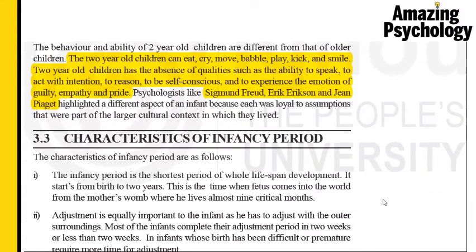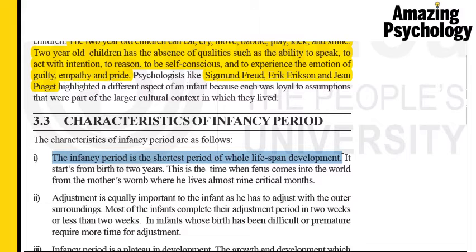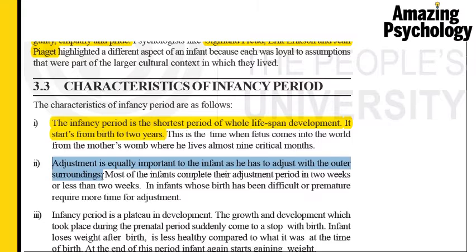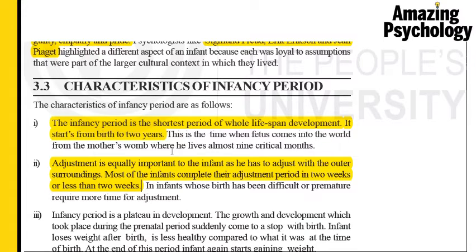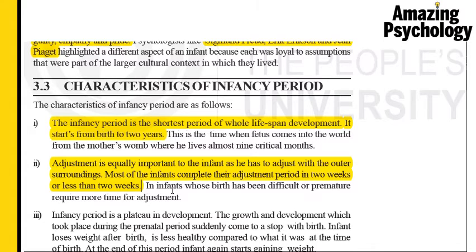Let's move on to the characteristics of the infancy period. The infancy period is the shortest period of the whole lifespan development — from birth to two years. This is when the mother gives birth and the child comes out into the world after spending nine months in the womb. It's a time when a great deal of adjustment is required from the infant, as the child has moved from one environment — the mother's womb — into a completely different one. Most infants complete that adjustment phase within the first two weeks, but premature infants require more time.